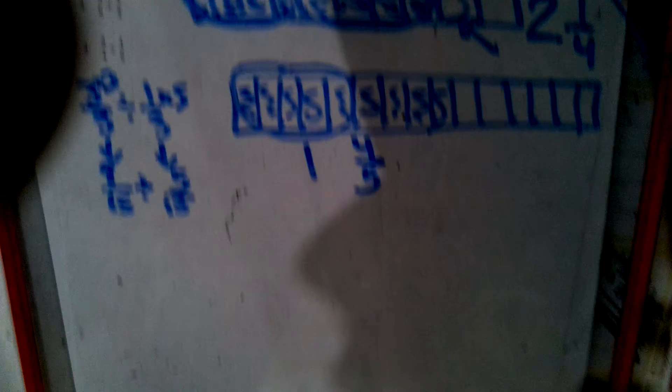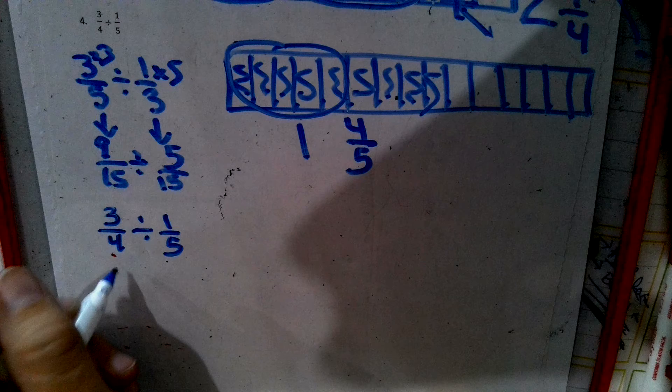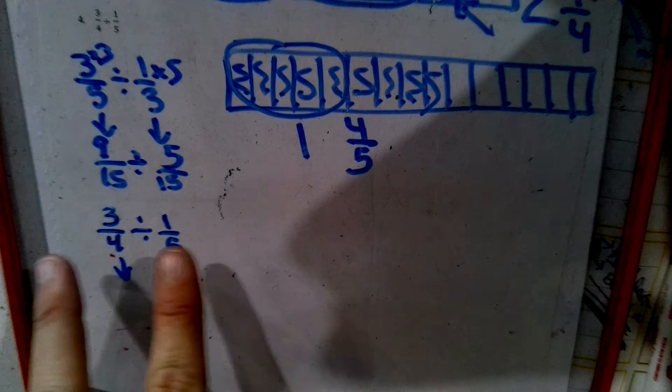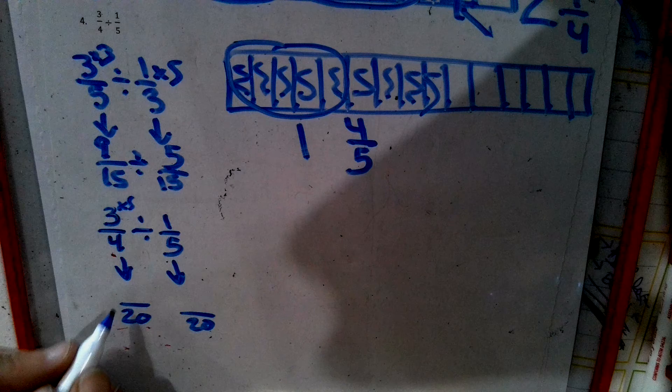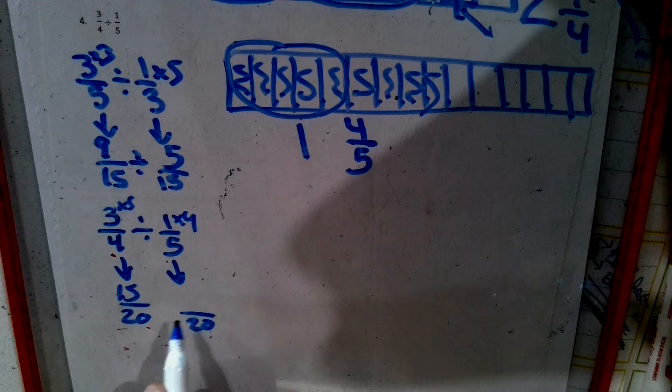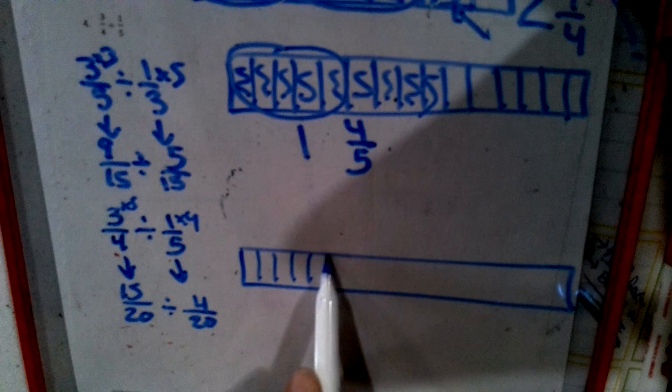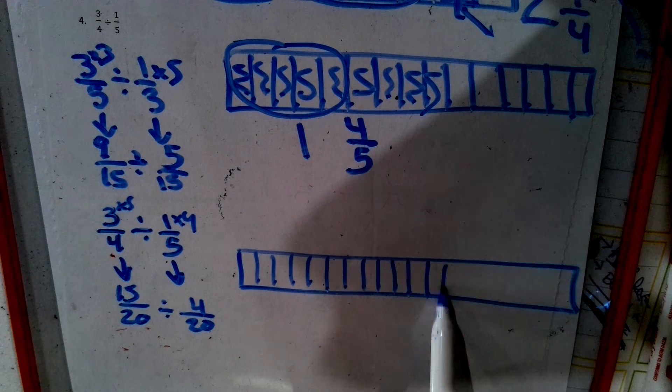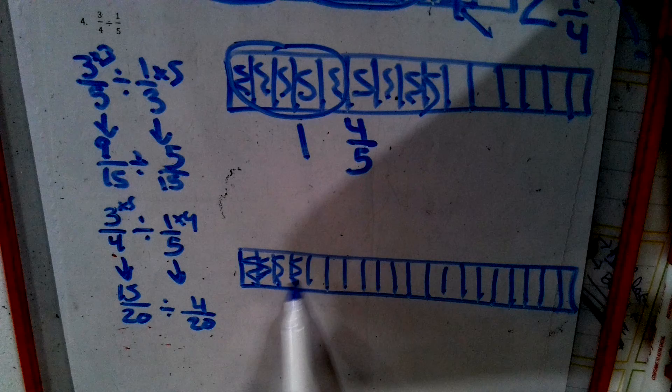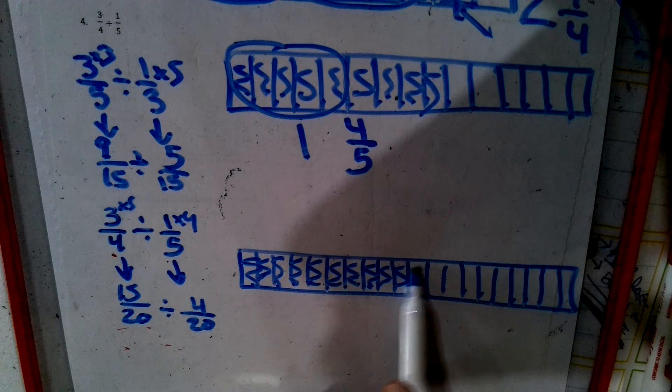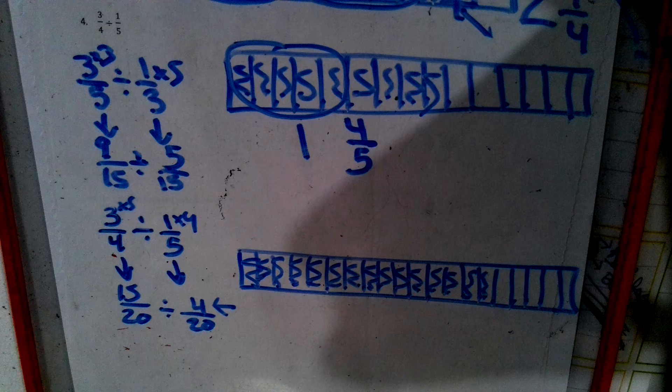Number four. We have three fourths divided by one fifth. We got to get a common denominator. So, we're going to use 20 because we times the two bottoms. Four goes to 20 by five. Three times five is 15. Five goes to 20 by four. We have a four. Now, we're ready to draw. We need a set of 20. One, two, three, four, five, six, seven, eight, nine, 10, 11, 12, 13, 14, 15, 16, 17, 18, 19, 20. Color in 15. One, two, three, four, five, six, seven, eight, nine, 10, 11, 12, 13, 14, 15. Group them in groups of four.